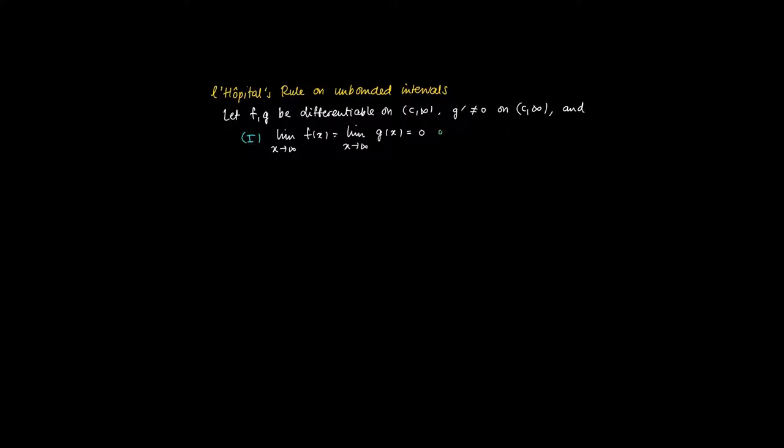And we look at the similar cases that we had before. So first of all, the limit of x to infinity of f(x) equals the limit of x to infinity of g(x) equals 0, or both limits are kind of erratic and they go to plus or minus infinity.